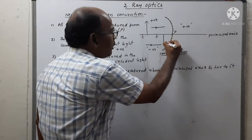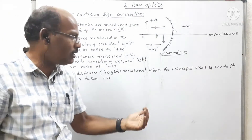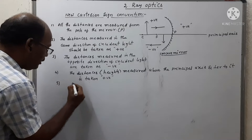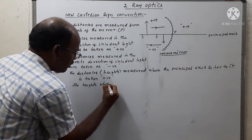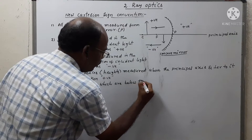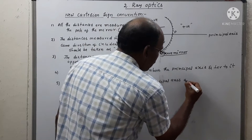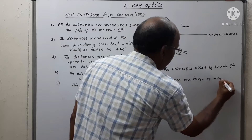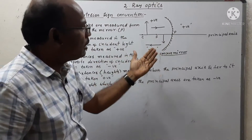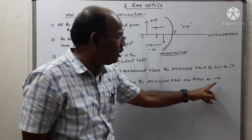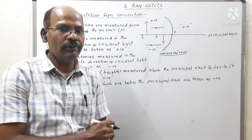The fifth sign convention: heights or distances below the principal axis and perpendicular to its surface are taken as negative. These are the five important sign conventions used to solve problems.